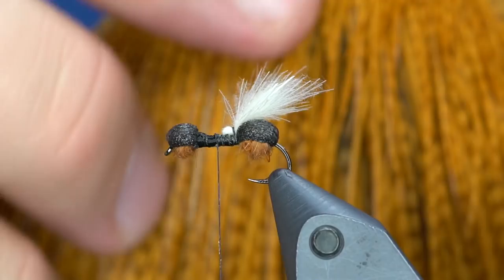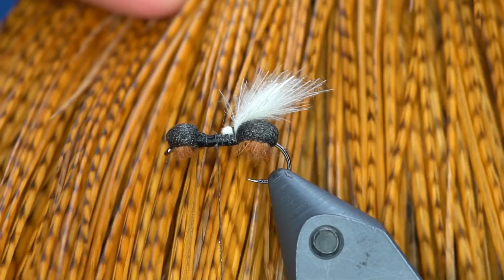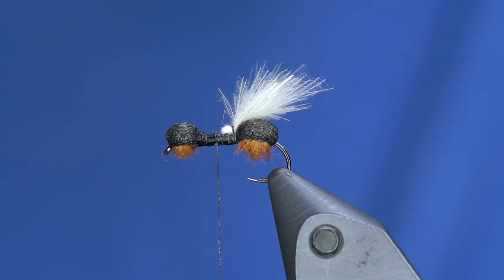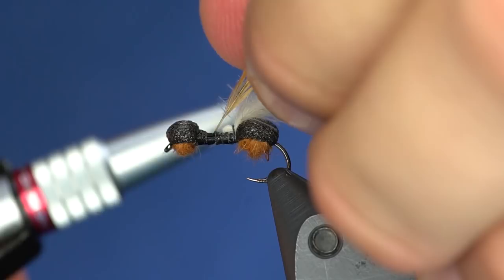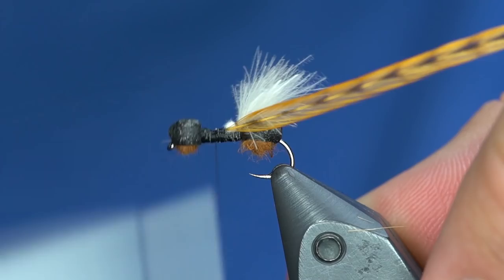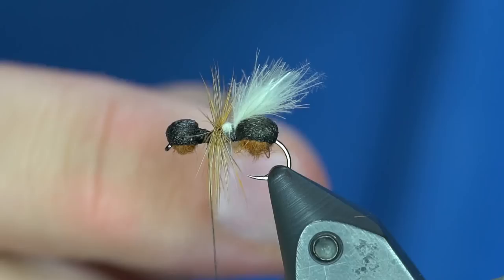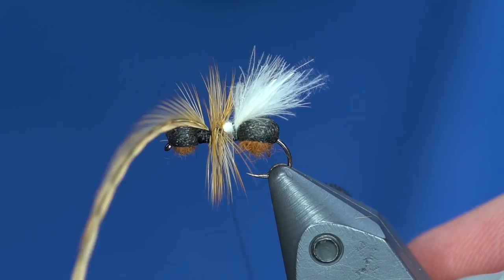So I'll just take a piece of hackle, tie it in right in front of that wing, and I'll just wrap that with touching turns right about to there. So you can see there's still some good space between the head and the butt.